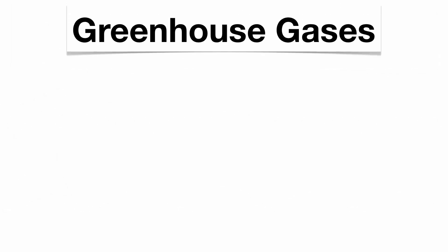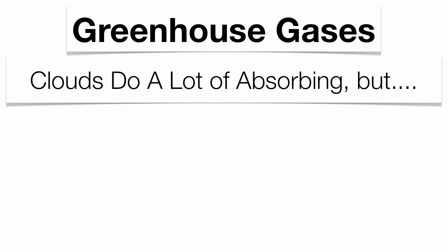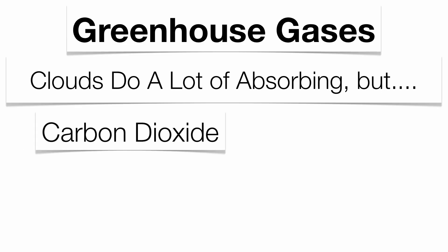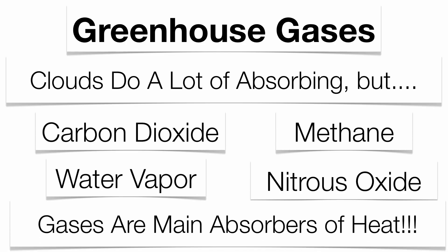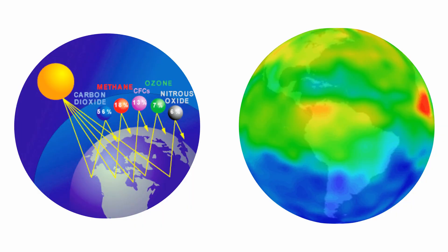Infrared energy is not allowed out because of greenhouse gases in the atmosphere. Clouds do a lot of absorbing, but it's carbon dioxide, water vapor, methane, and nitrous oxide that absorb the heat energy given off by the Earth. Once that heat energy gets trapped, temperatures around the globe go up. Carbon dioxide makes up 56% of greenhouse gases. If you look at the right-hand side picture, all that green represents carbon dioxide emissions — mostly found in the northern hemisphere, where the majority of industry and population are located.